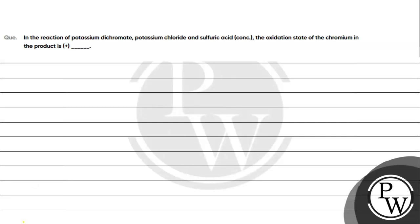Hello, let's read this question. The question says in the reaction of potassium dichromate, potassium chloride and sulfuric acid concentrated, the oxidation state of chromium in the product is?